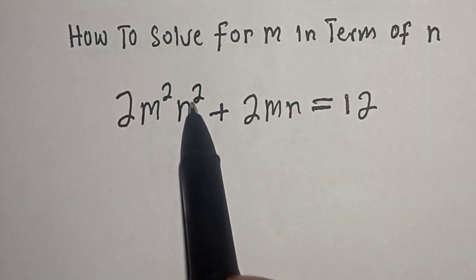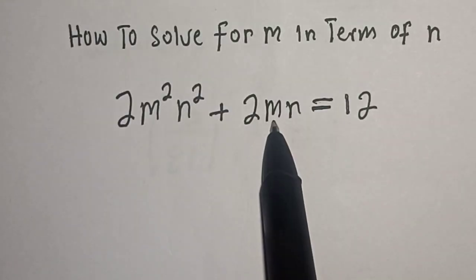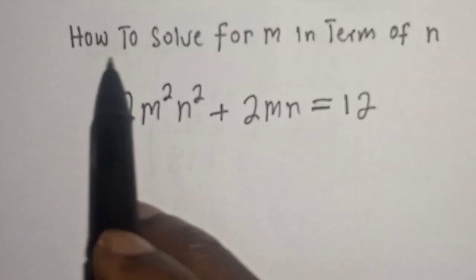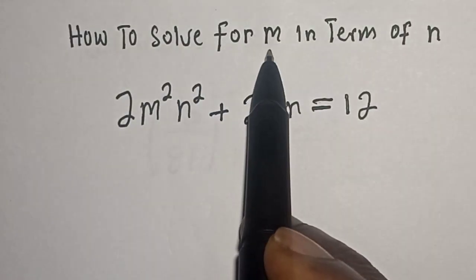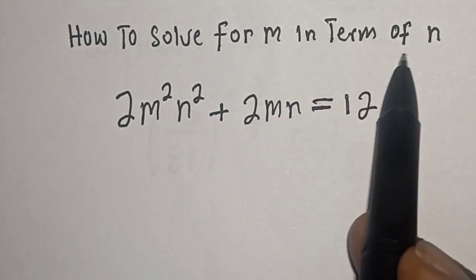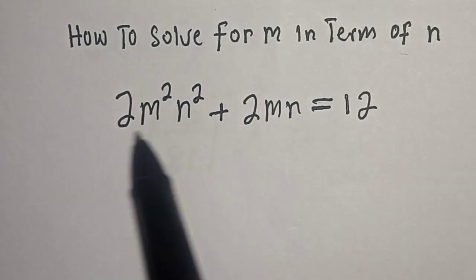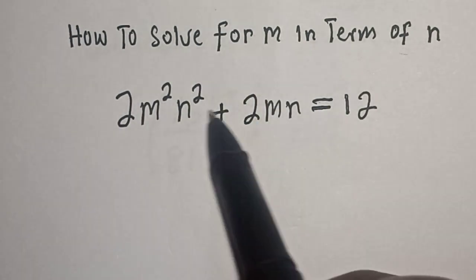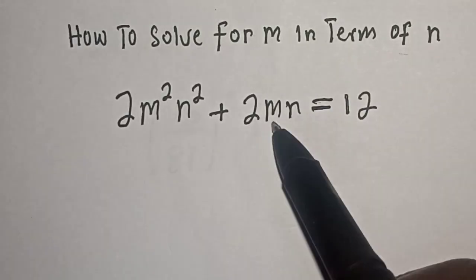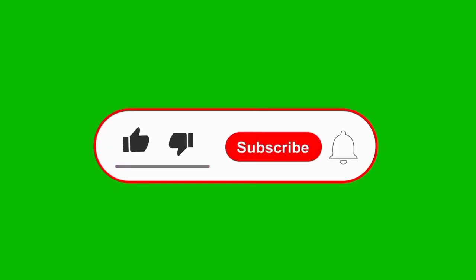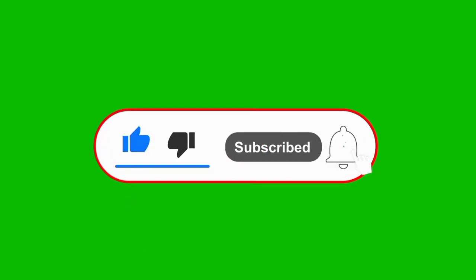2m²n² + 2mn = 12. We want to solve for m in terms of n. Hi everyone, welcome to my class. In this class we quickly want to solve for m in terms of n from this given equation. Before we proceed, please don't forget to like, share, comment and subscribe.